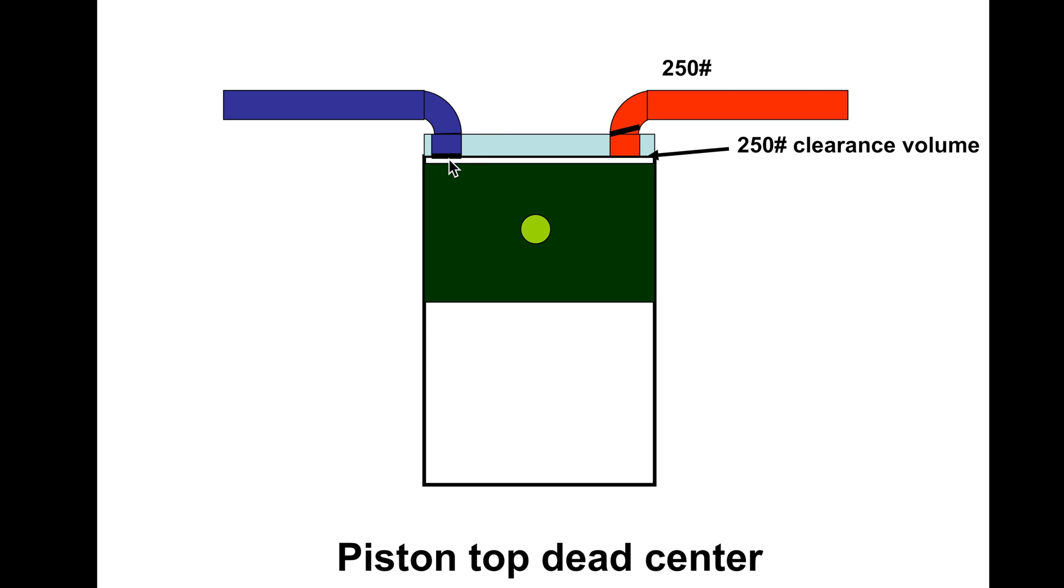Valves closed. Discharge line valves open a little bit because the piston has just come up. There is a clearance volume in here. This is a volume of gas that's there to mechanically protect the compressor.